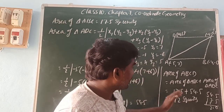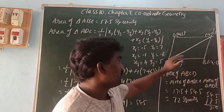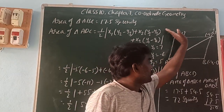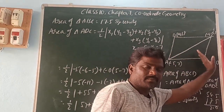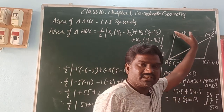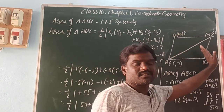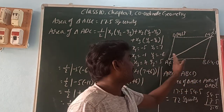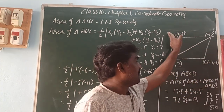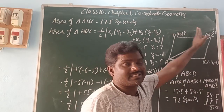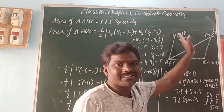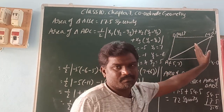We can also use another method: draw diagonal BD instead. This forms two triangles: ADB and BDC. Using that approach will give the same answer of 72 square units.